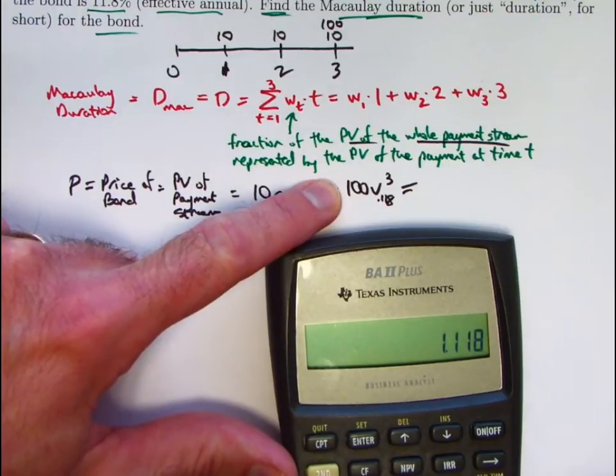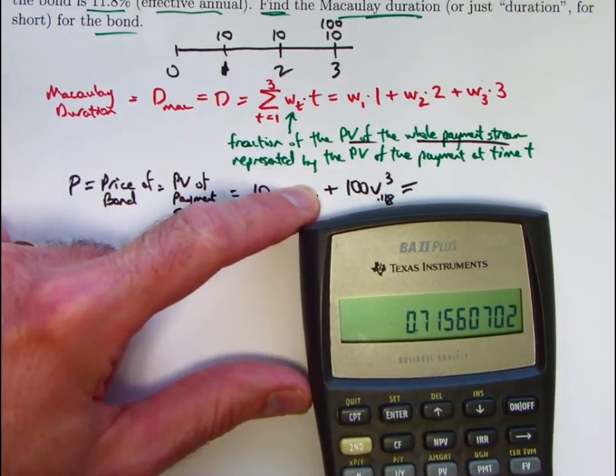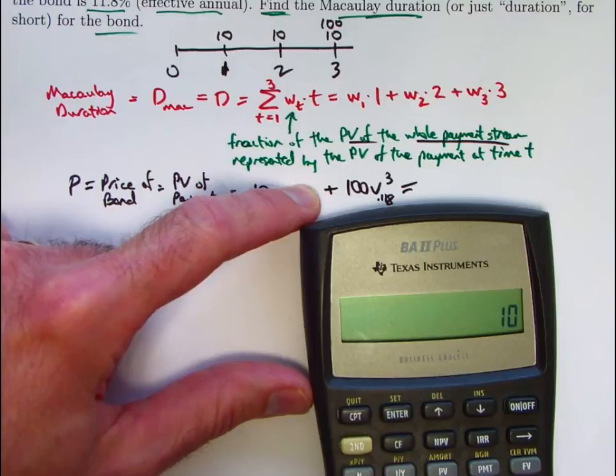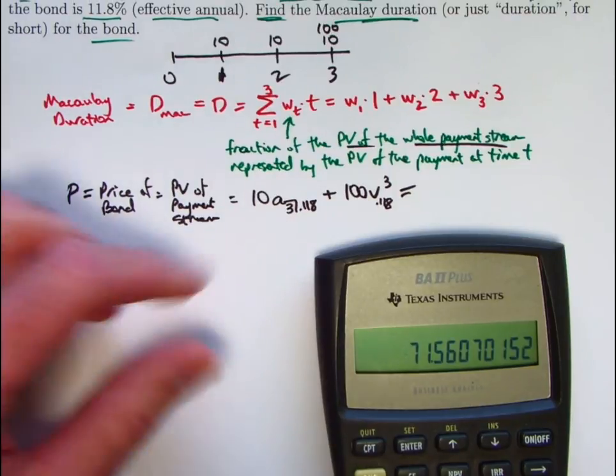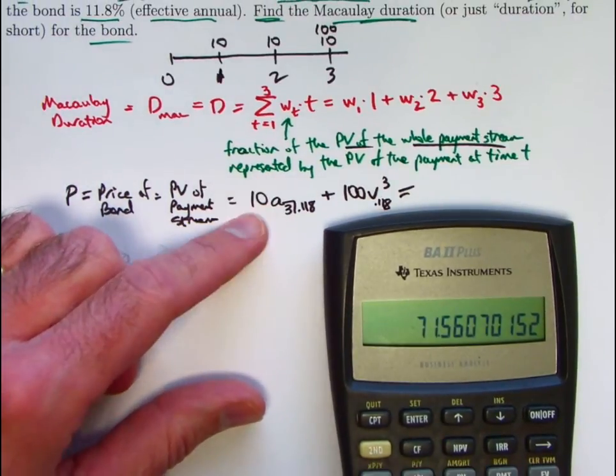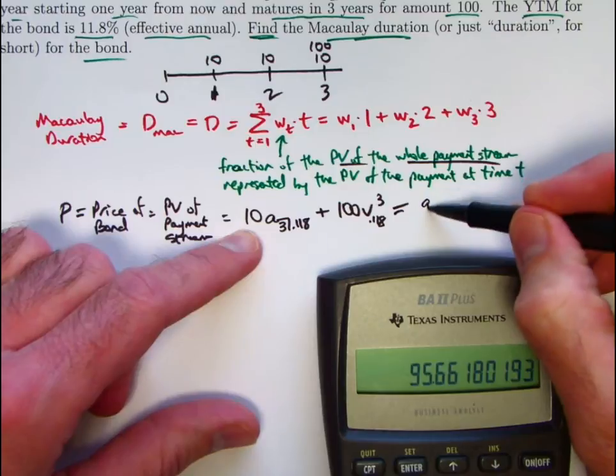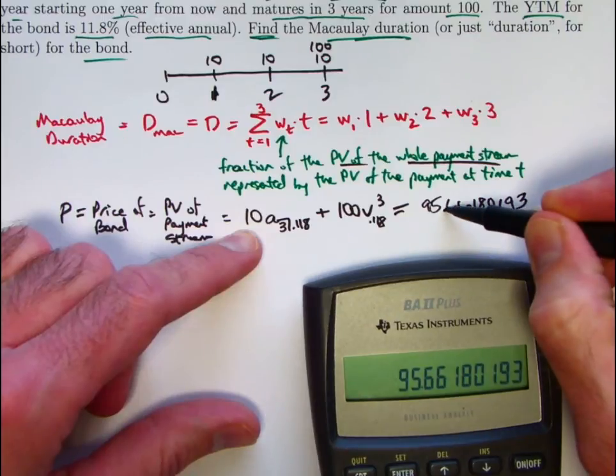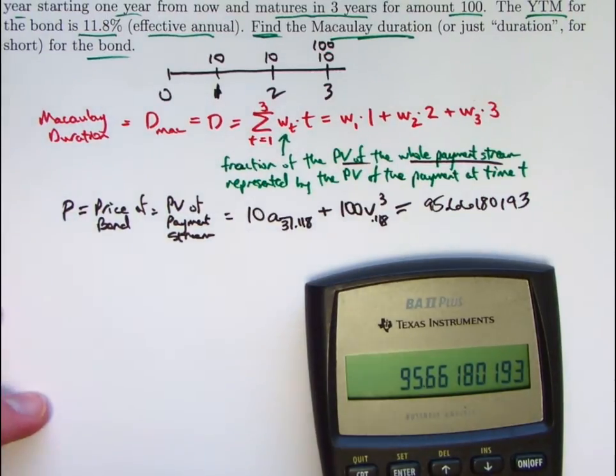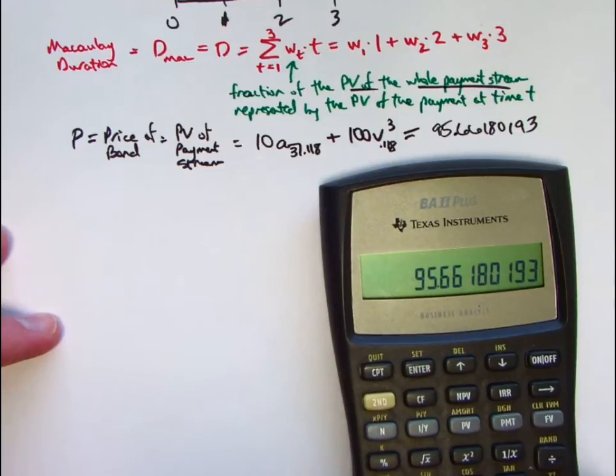I also, by the way, could just raise 1.118 to the negative 3 power. Raise it to the negative 3 power. Get this. You should check that on your own. Times 100. There's the present value of the final payment there. The redemption value, I should say. And that gets added to what was in register 1. Looks like the price of the bond is 95.66. Let me go ahead and include more decimal places, just to make sure any errors don't get magnified as we go. I will store this in register 0, actually, so I won't really have to worry about those. I didn't really have to write those down because this is now stored in register 0.